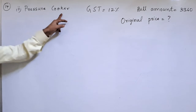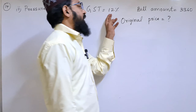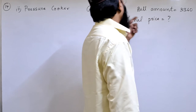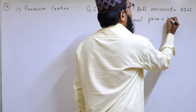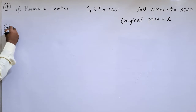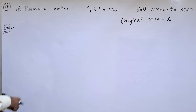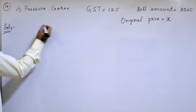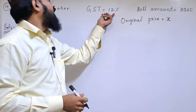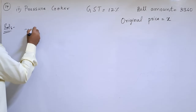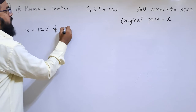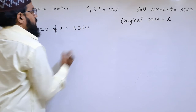Second item: pressure cooker. GST is 12%, bill amount is ₹3,360, and we don't know the original price, so we will take it as x. We know that for this original price GST has been applied, so x plus 12% of x is equal to 3,360.